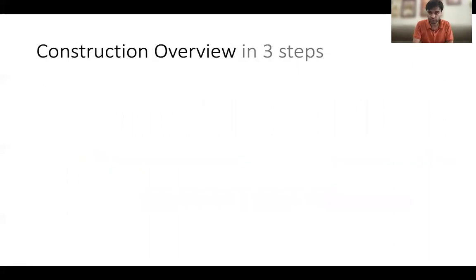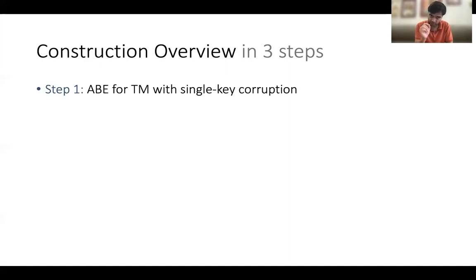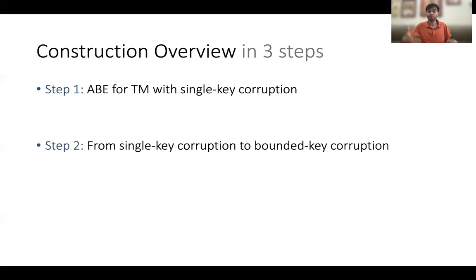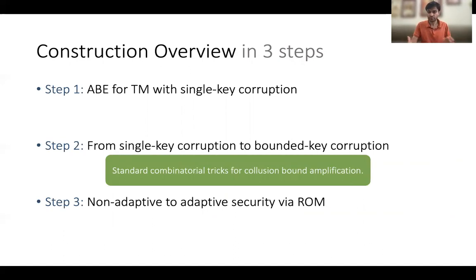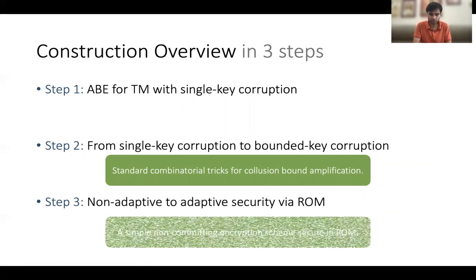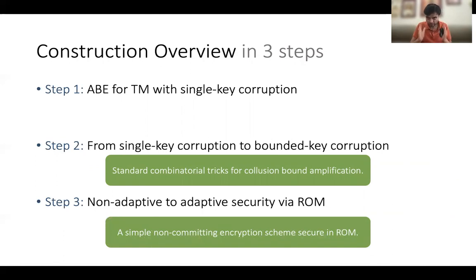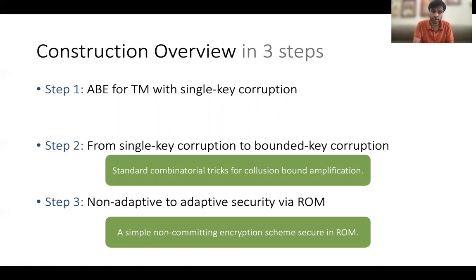At a very high level, our construction has three steps. First, we build an attribute-based encryption in which we can only corrupt one key — single key corruption, i.e., a one-time collusion bound. Then we show how to go from single key corruption to bounded key corruption. Finally, we show how to upgrade non-adaptive security to adaptive security via the random oracle model. Step two follows via standard combinatorial tricks commonly used in the literature. Step three relies on simple non-committing encryption that we proved secure under the random oracle model, and we show how to generically upgrade non-adaptive security using this non-committing encryption scheme. The first step is where most of the new technical ideas came in — showing how to use identity-based encryption to build ABE for Turing machines with just single key corruption.